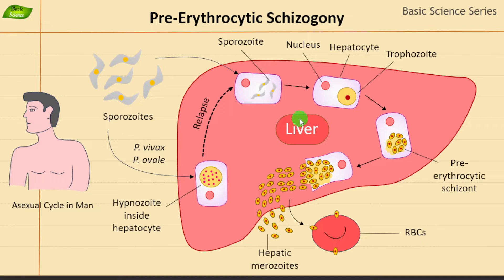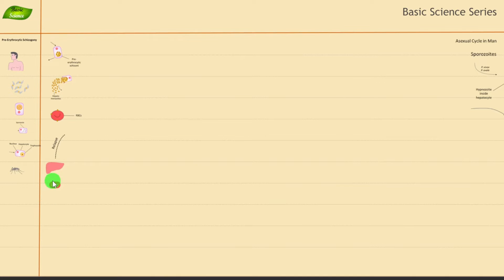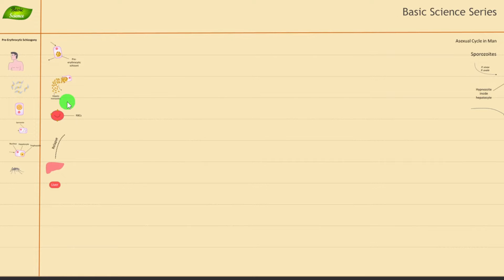We'll start with the pre-erythrocytic schizogony using illustrated diagrams. The human is basically the intermediate host, where asexual reproduction of the parasite occurs. The definitive host is where sexual reproduction happens, which is the female Anopheles mosquito — not males — because the female Anopheles feeds on human blood.